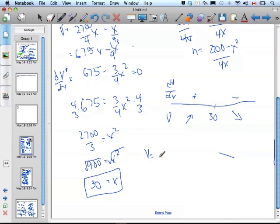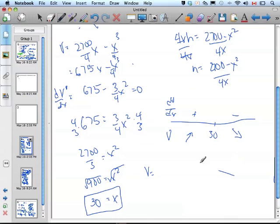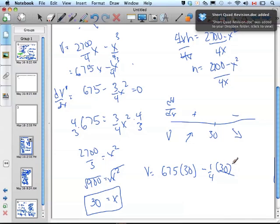To find the actual volume, I know that I have the equation, where did it go? 675 over 4 times 30, minus 1 fourth, 30 cubed.